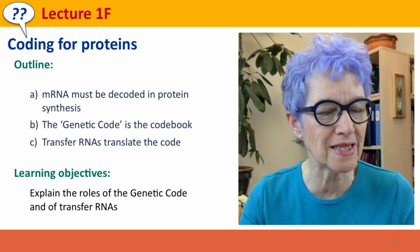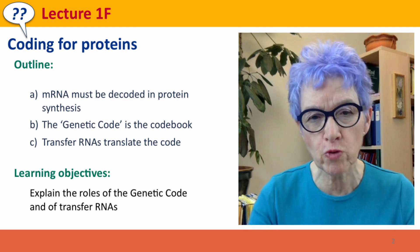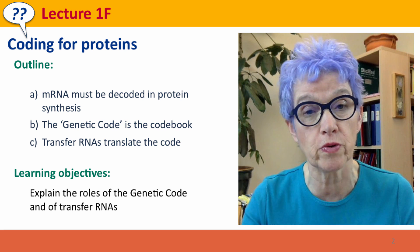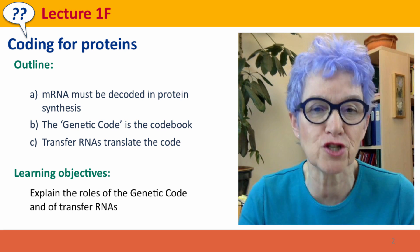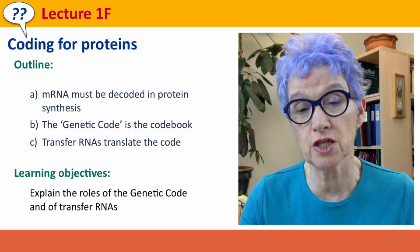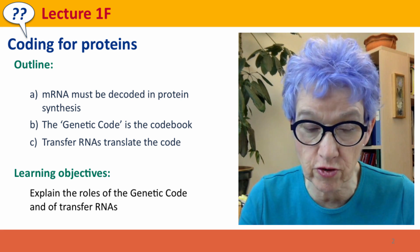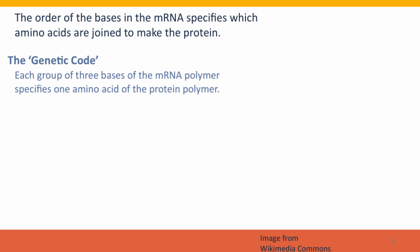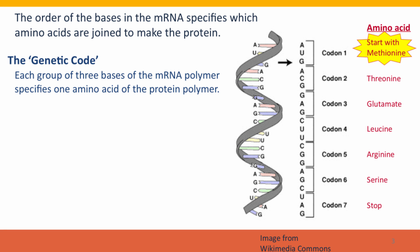The genetic code isn't the DNA sequence. The genetic code is the codebook that explains how the translation from one language to another is going to happen, just like any other codebook or a foreign language dictionary. The actual translation is done by molecules called transfer RNAs. The order of the bases in the messenger RNA specifies which amino acids are going to be joined to make the protein. The genetic code is the specification, the connection between bases and amino acids, and it's read in groups of three bases.